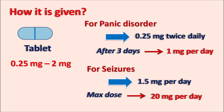Being a CNS depressant, Clonazepam should be carefully combined with other CNS depressants; along with opioids, it may produce sedation, respiratory depression, and even coma and death. Sedation, dizziness, muscle incoordination, memory impairment, and myalgias are important side effects. Hope you have enjoyed this video. If you like this video, please subscribe to our channel, share this video with your friends, and post your comments in the comment box. Thank you for watching.